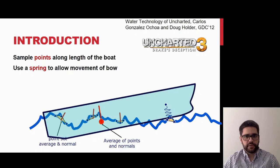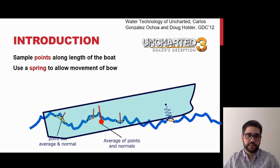Another example of a real-time solution is from the Uncharted 3 game, which uses sample points along the model surface and springs to simulate typical oscillation movement of a buoyant object.